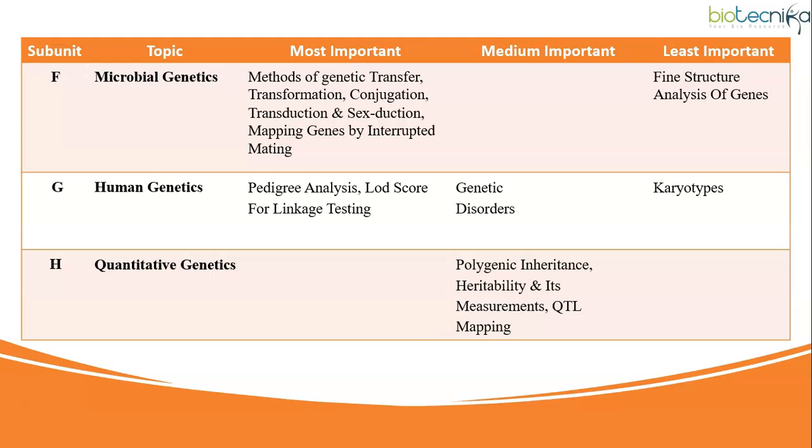Along with subunit D that is gene mapping method, subunit F microbial genetics is equally important. In subunit F that is microbial genetics, you study about methods of genetic transfer that is transformation, conjugation, transduction and specially sexduction and mapping genes by interrupted gene mating is the most important topic from this particular subunit.